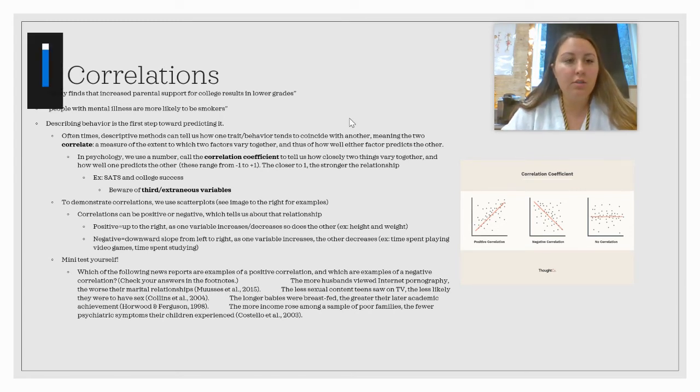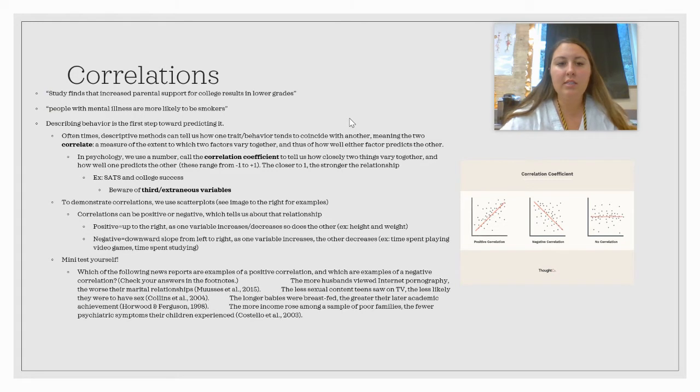Describing behavior is really the first step toward predicting it. Oftentimes, descriptive methods can tell us how one trait relates to another, which is what we call correlating. In psych, we use a number called a correlation coefficient to tell us how closely two things vary together and how well one predicts the other. Let's say I want to know the correlation coefficient between height and weight. How does height relate to weight? When we do this research, what we would find is that it's actually a pretty strong positive relationship, meaning as height goes up, weight typically also goes up.